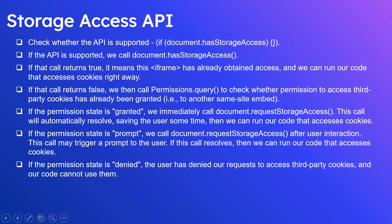This is the high-level process to use the Storage Access API. First, check whether the API is supported on the specific browser — you can use 'if document.hasStorageAccess'. If it returns true, the browser has API access and you can start using it. If the API is supported, we then call document.hasStorageAccess — if that returns true, it means the iframe has already obtained access and we can run our code to access the cookie right away.